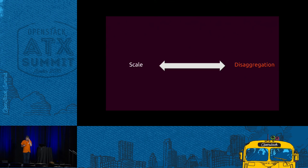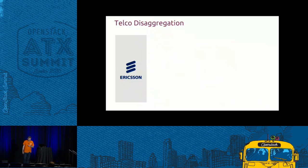With big software and this move to scale-out, we see a push and pull. As we get more scale, we have to disaggregate — split things into multiple units. And as we disaggregate, we get more scale. To explain that, we take a telco example.